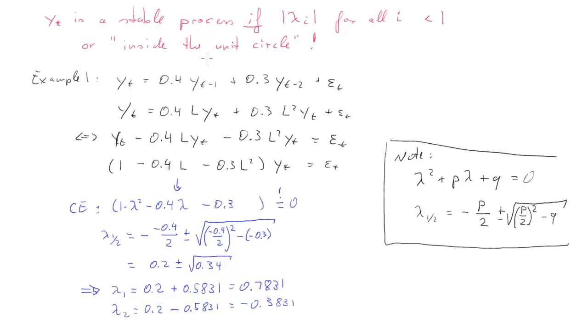So the question now is, does that describe a stable or explosive process for y_t? We'll have to go back up to our rule. We want the absolute values of all solutions to be smaller than 1, and indeed that is the case here. So this describes a stable process for y_t.